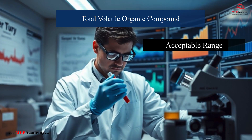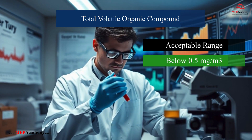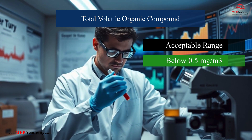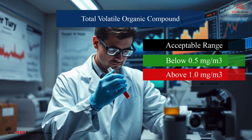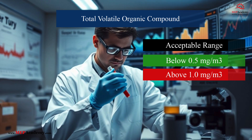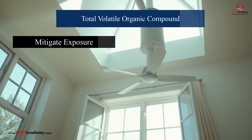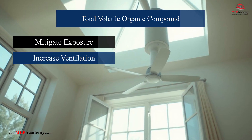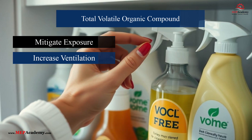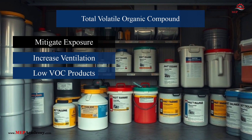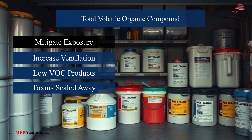Acceptable Range: Below 0.5 mg per cubic meter is considered safe, while levels exceeding 1 mg per cubic meter indicate poor air quality. To mitigate exposure, increase ventilation by opening windows or using exhaust fans, use low-VOC or VOC-free products, and store chemicals and paints in sealed containers away from living areas.